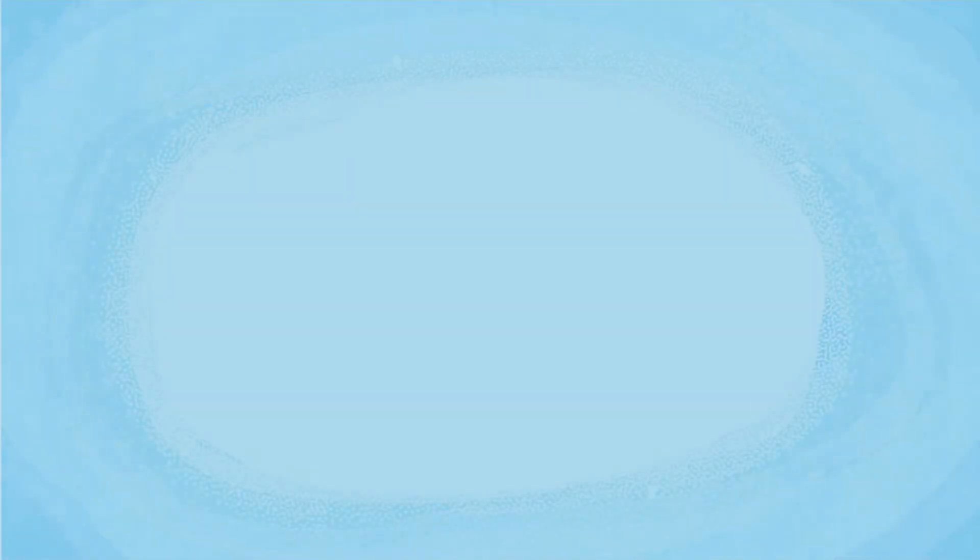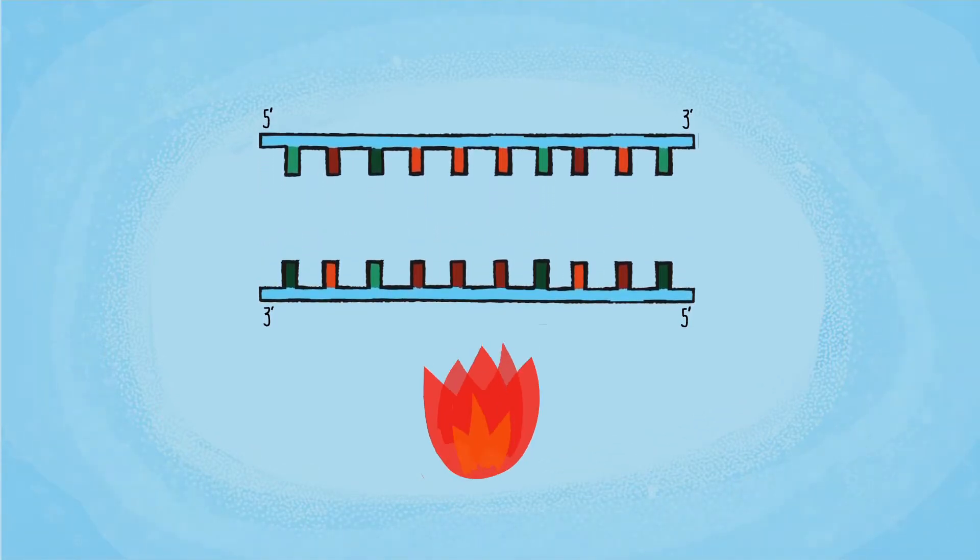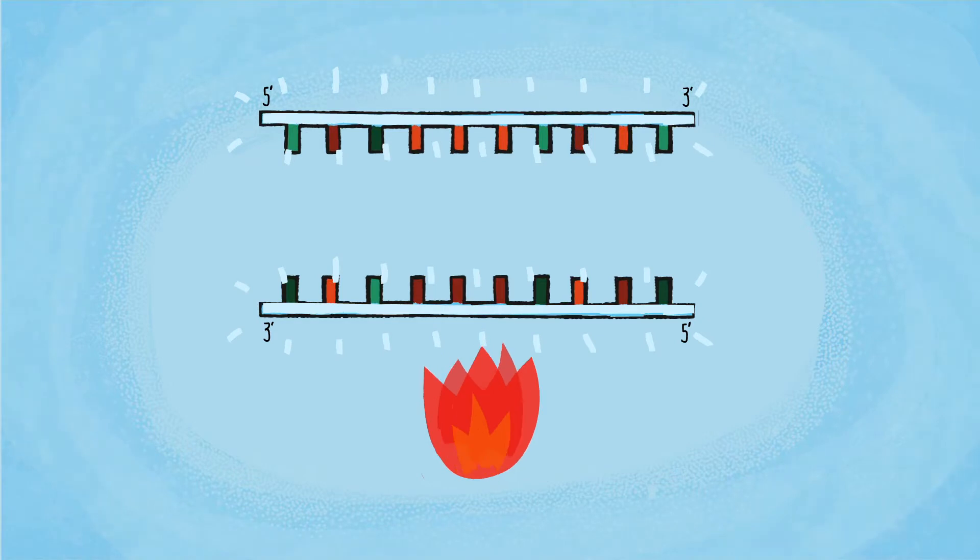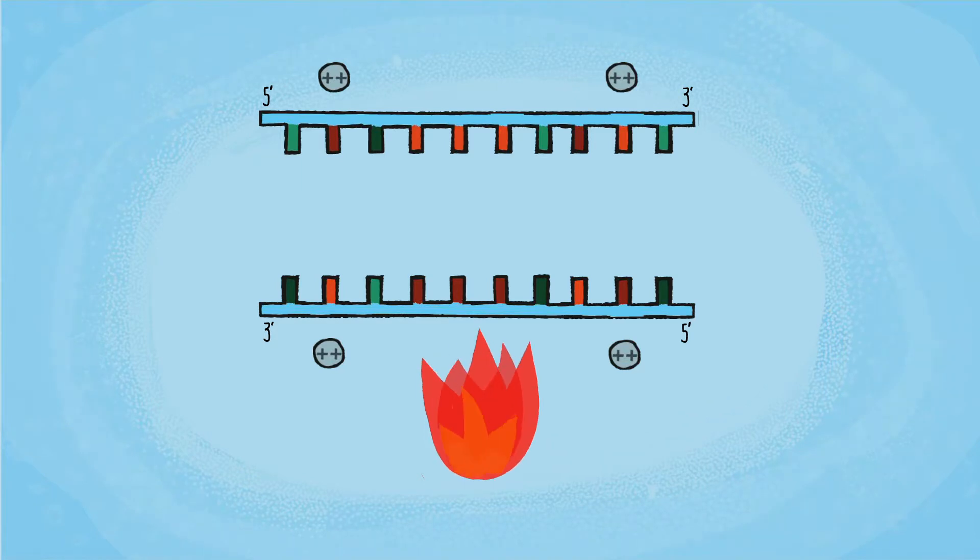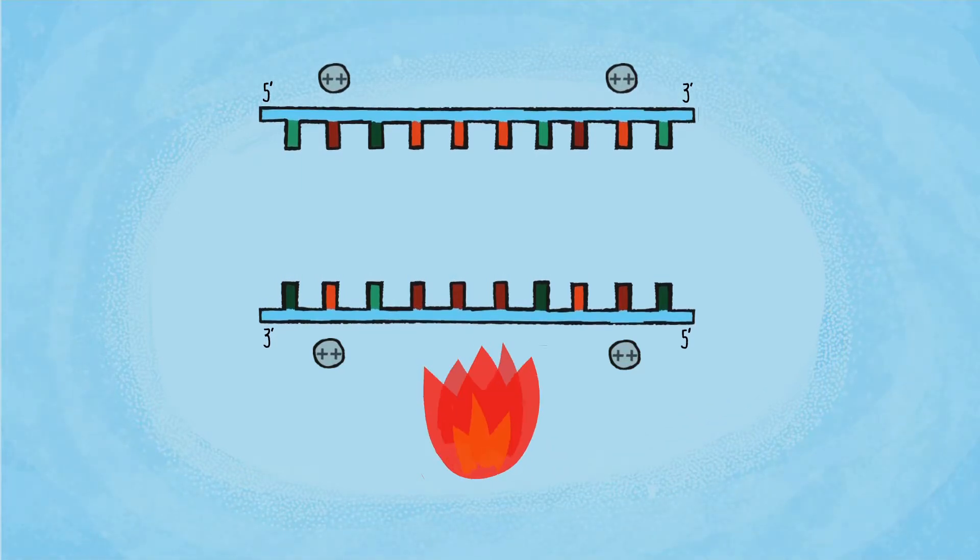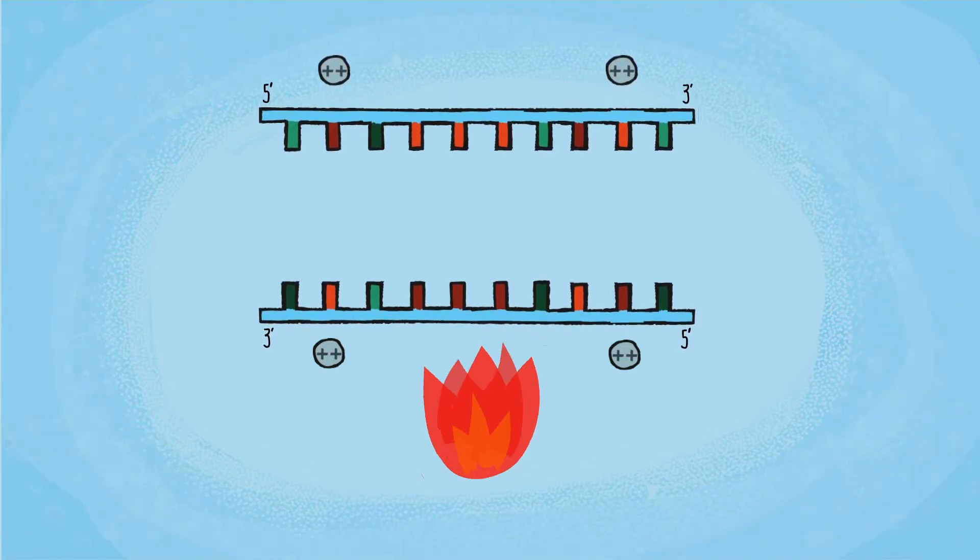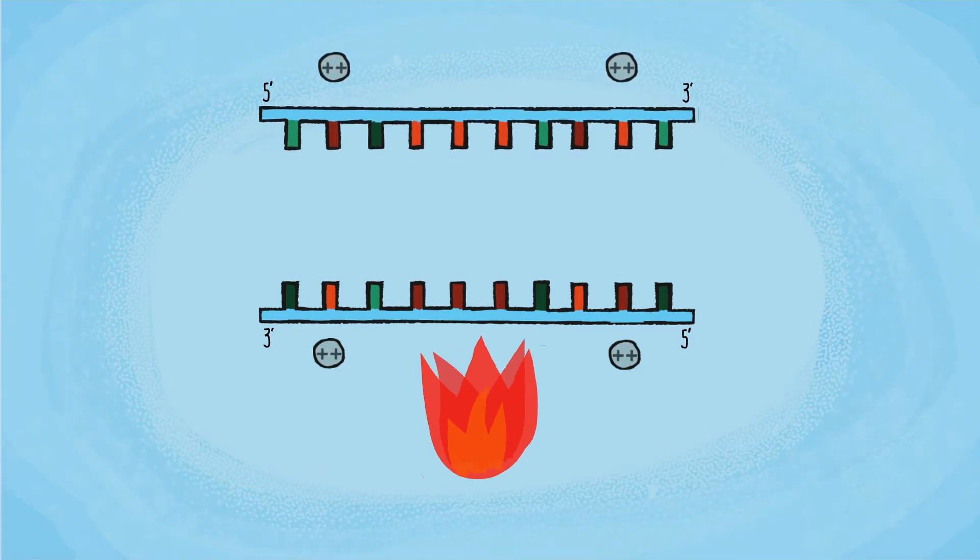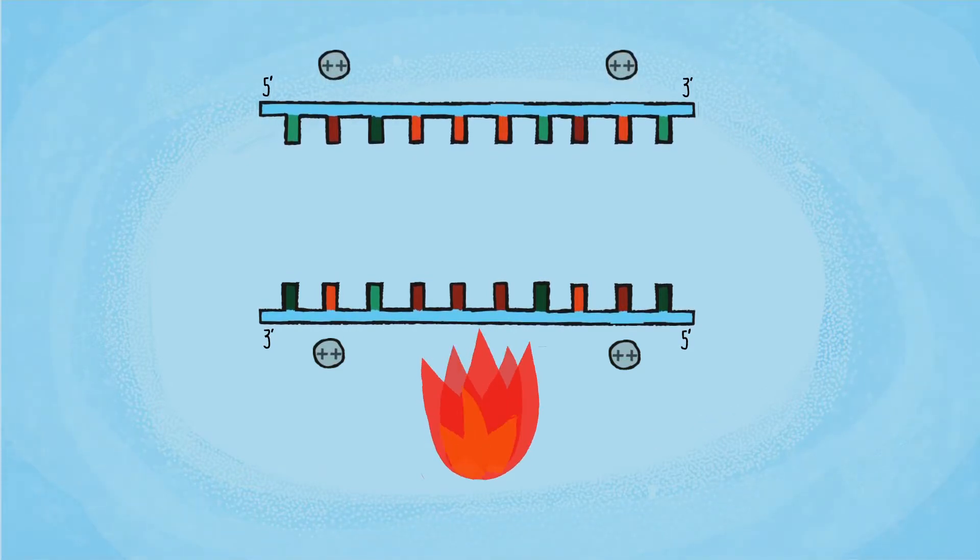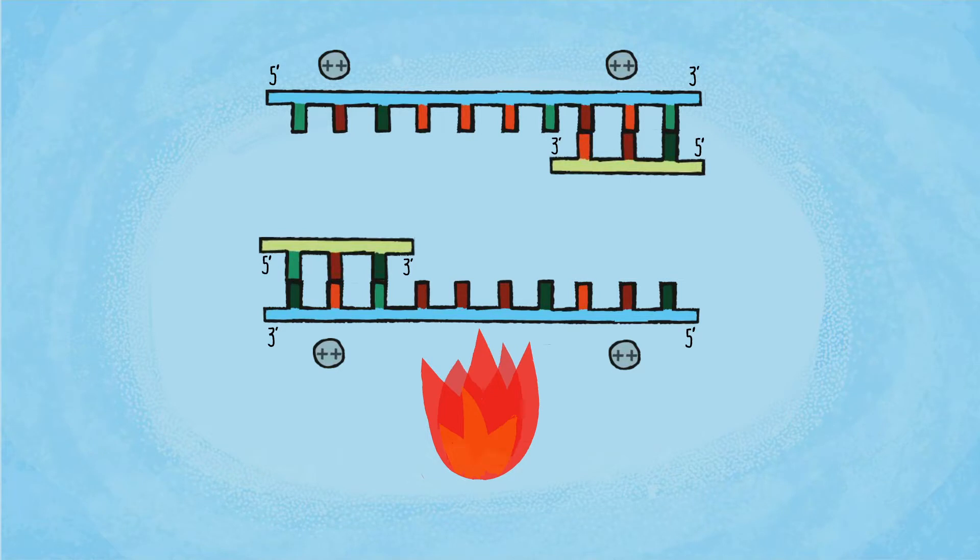A PCR cycle begins by heating the DNA to denature the double-stranded template. Because DNA has an overall negative charge due to the phosphodiester backbone, the positively charged magnesium cations associate with the DNA strands. This reduces the repulsion between the two strands, thus stabilizing the base pairing and affecting the melting temperature at which the strands denature. Once the two strands are separated, the primers can then anneal to the target sequence.